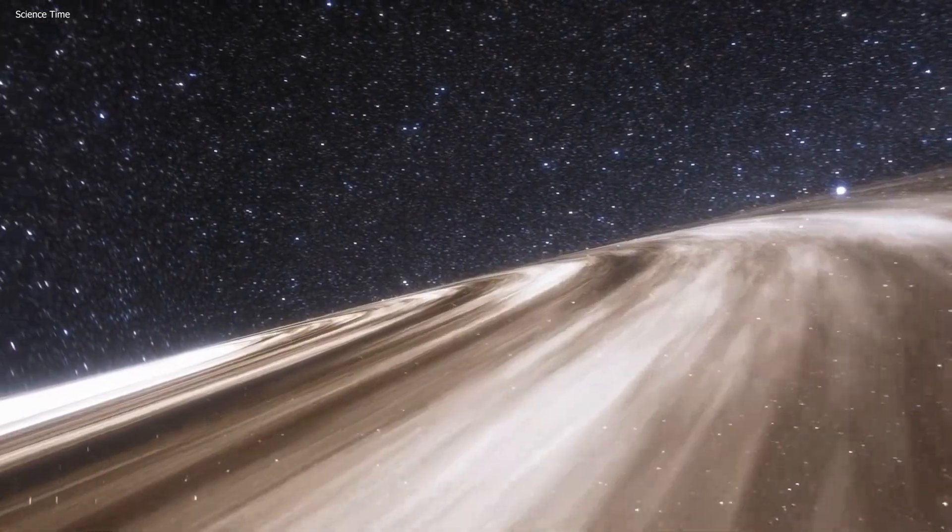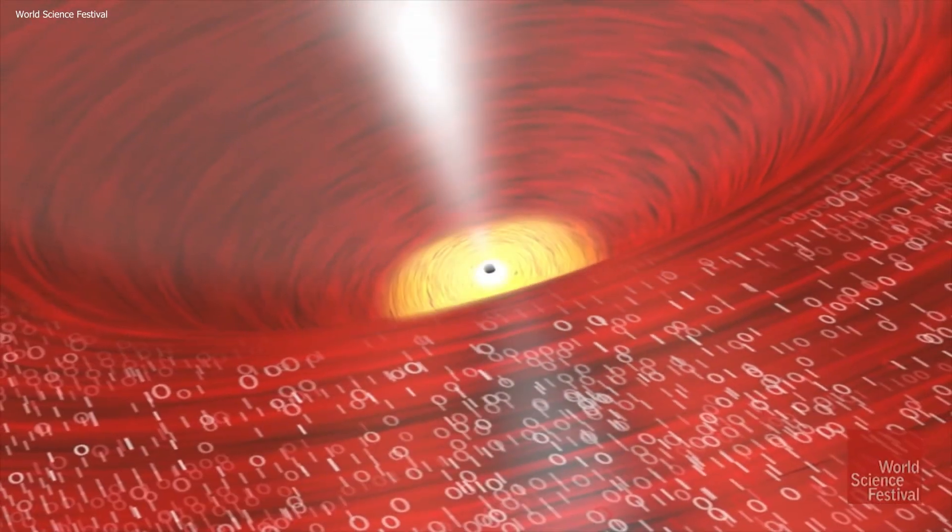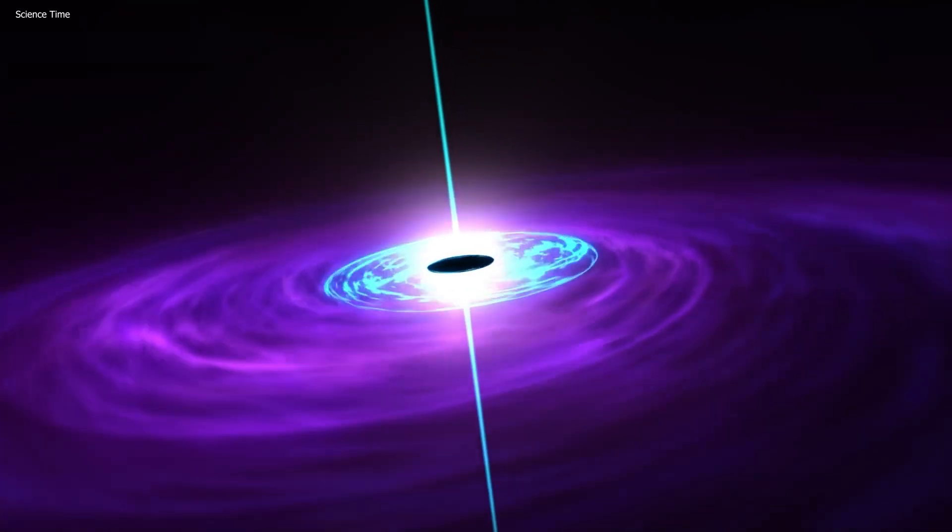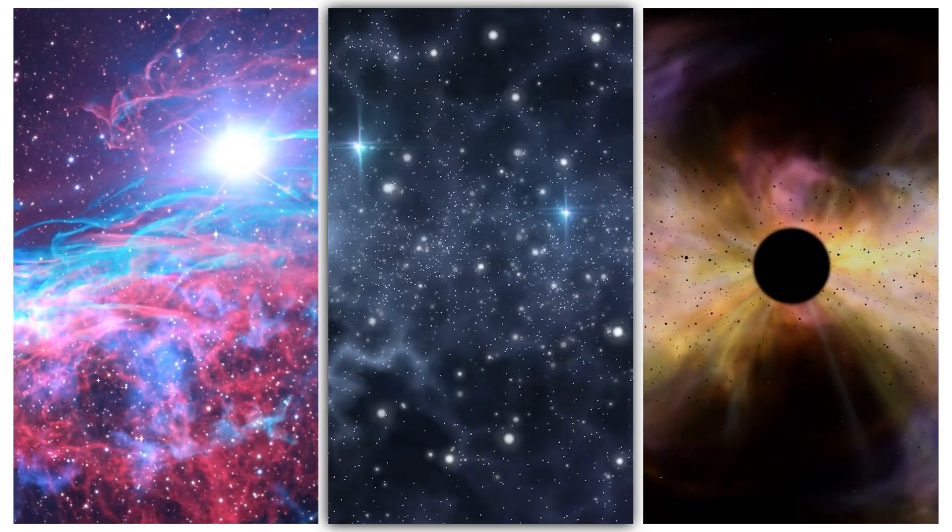The essence of this theory lies in the idea that the outer space around a black hole plays an important role in its function. It is not just a singular point where all matter compresses, but instead is part of an ongoing cycle of energy.